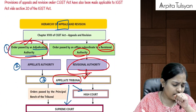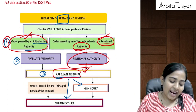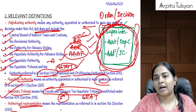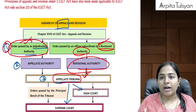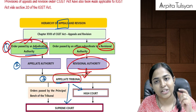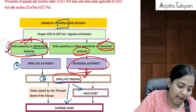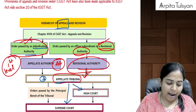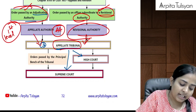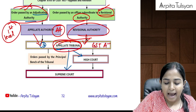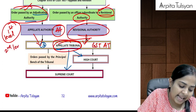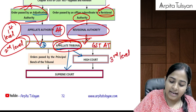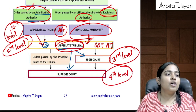If either the taxpayer or the department is not happy with the order passed by the adjudicating authority, they can file an appeal before the appellate authority — the first level of appeal. If unhappy with that, they can go to the GST Appellate Tribunal (GSTAT) — the second level. Then the third level is High Court, and fourth is Supreme Court.